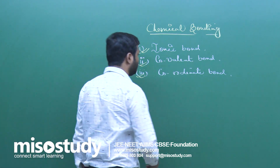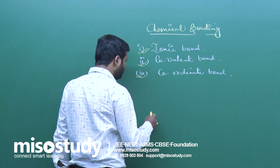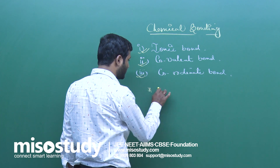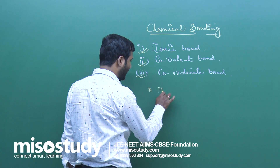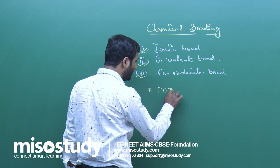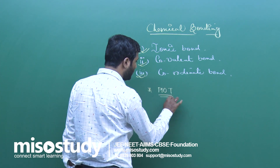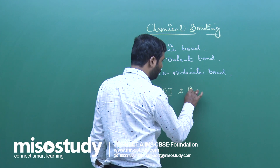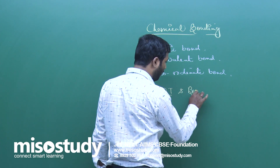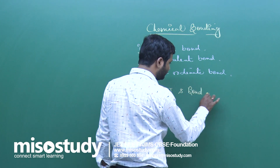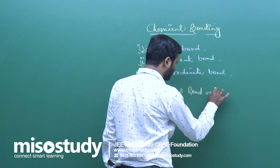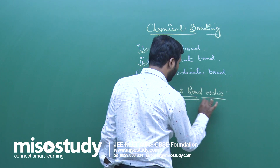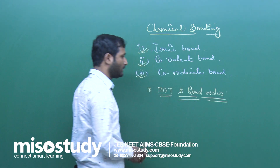Now the important topic related to this chapter is MOT — molecular orbital theory — and how to find bond order. MOT and how to find bond order.